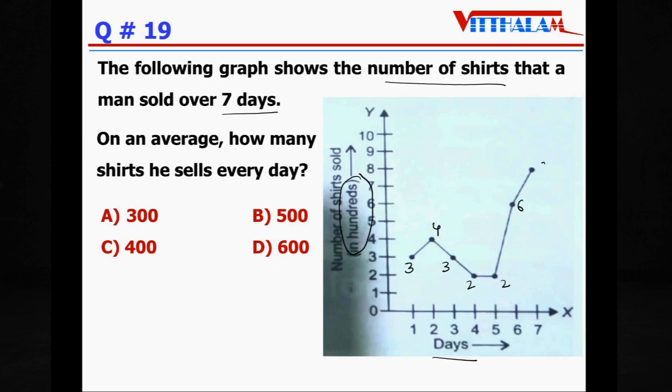Correct, let's total. So 4 plus 3, 7, plus 3, 10, plus 2, 12, plus 2, 14, plus 6, 20, 20 plus 8, 28. And it is 100, so 2,800 is the total shirts have been sold by that person. And in 7 days, so divided by 7. Therefore it is 400 shirts per day. So answer is C.